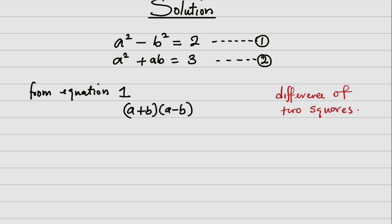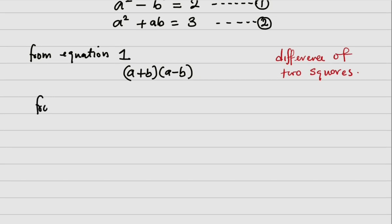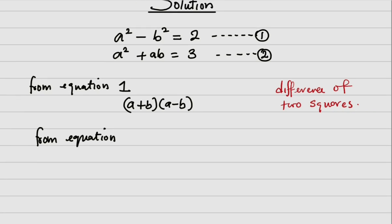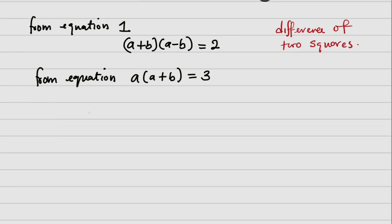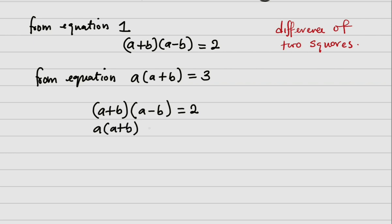Now, from equation two, I'll factorize so that I will have a into (a + b), which equals three. Do not forget equation one is equals to two. So in summary: (a + b) into (a - b) equals two, and a into (a + b) equals three.